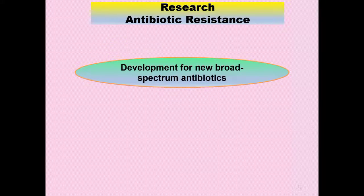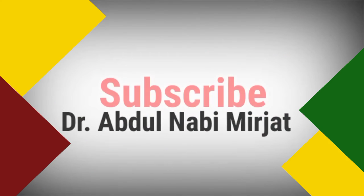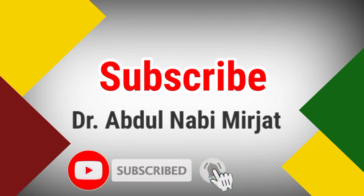Research on antibiotic resistance: future research should focus on the development of new broad-spectrum antibiotics and the search for alternative strategies to treat infections caused by multi-drug resistant bacteria. As discussed in a previous lecture on quorum sensing, most pathogenic bacteria use the quorum sensing system to cause pathogenesis. Quorum sensing research is one alternative strategy through which we can control multi-drug resistant bacteria.